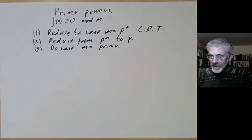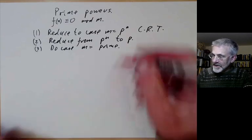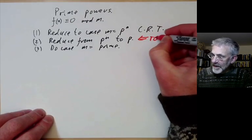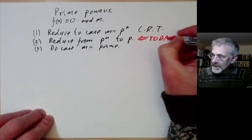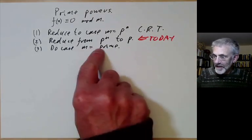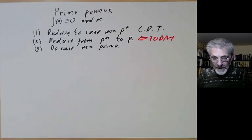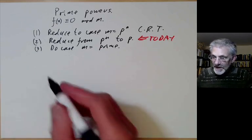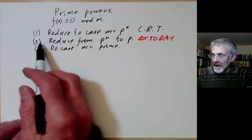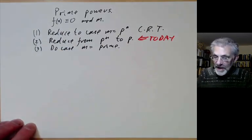In today's lecture, we'll cover the second step — reducing from the case p^n to the case of p. I previously covered the Chinese Remainder Theorem, and in a future lecture we'll discuss the case when m is a prime number.